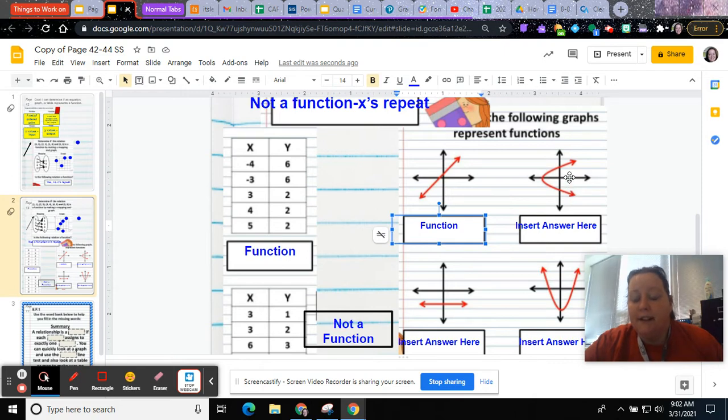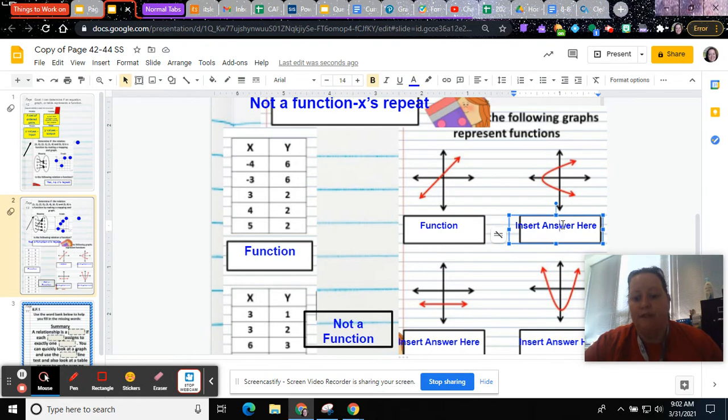Like whatever the x is here, like if it's 1, it'd be like (1, 2) and (1, negative 2), or whatever it would be. So this one, the x does repeat. So if you can draw a vertical line through it, and it hits more than one place, then it is not a function.